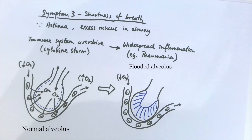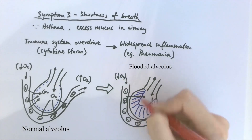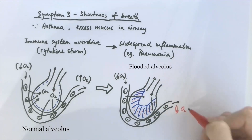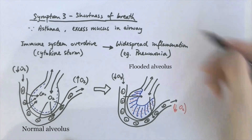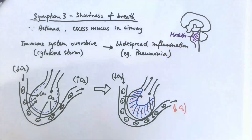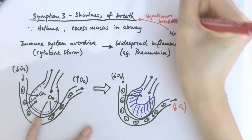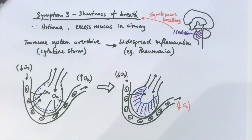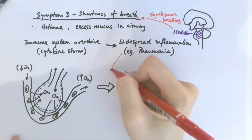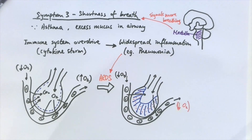In an attempt to kill the virus, the alveoli in your lungs are filled with liquid as a result of inflammation. Since the alveoli are essential for gaseous exchange, if they're flooded, there is less gaseous exchange and your body can't efficiently get oxygen in and carbon dioxide out. The brain senses that blood oxygen is low, so the medulla — the part of the brain that controls automatic functions — sends impulses to the respiratory system to breathe more rapidly to compensate, hence the shortness of breath. This fluid accumulation in the alveoli is known as Acute Respiratory Distress Syndrome, or ARDS.